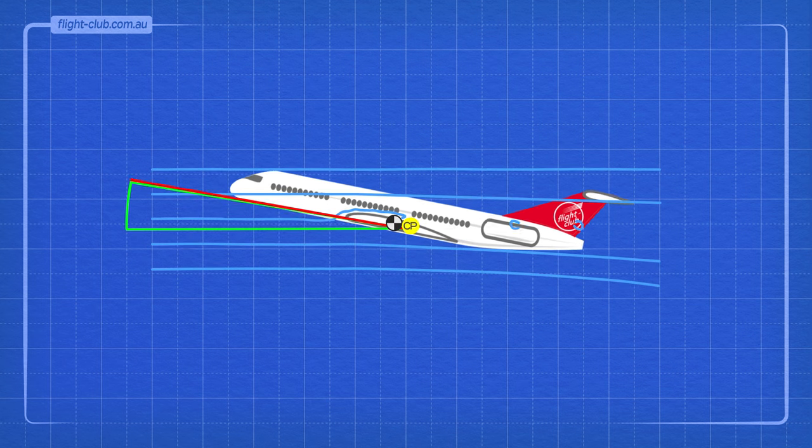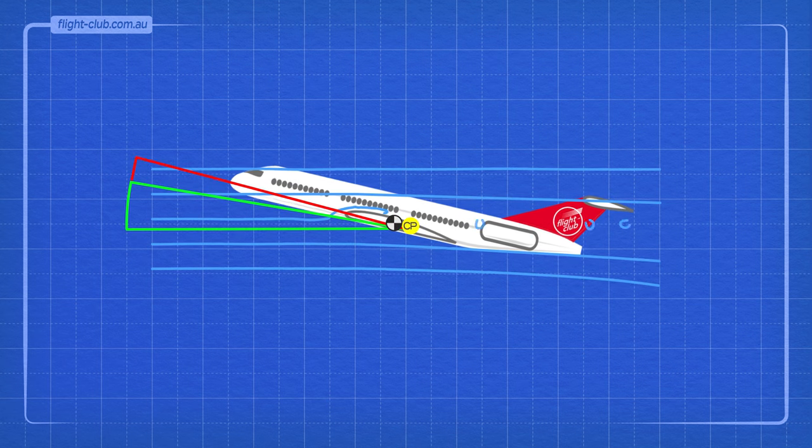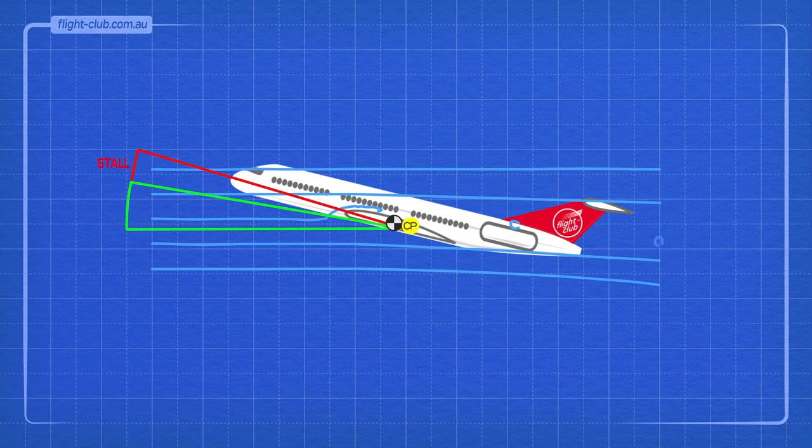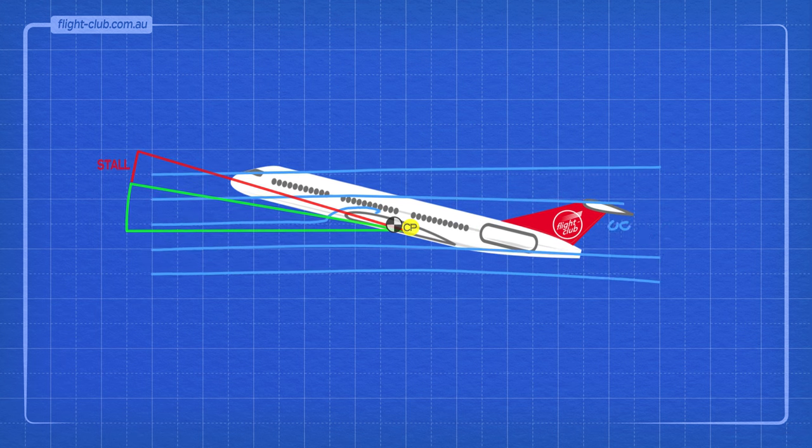Forward centre of pressure creates an unstable nose pitch-up moment. Reduced lift and more drag cause the aeroplane to sink.